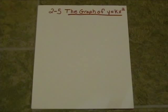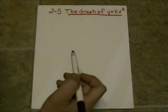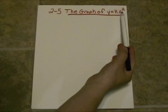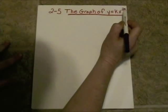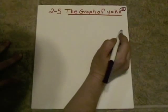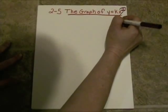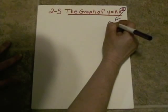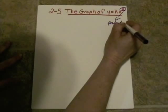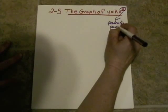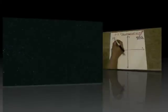We're going to take a look at the graph of another direct variation. This time the variation is y varies directly as x squared. Now this little exponent of 2 means we're not going to have lines for our graph this time — we're going to have a quadratic, and a quadratic function always graphs as a parabola.